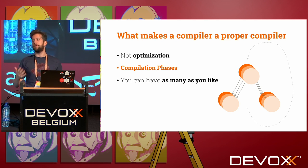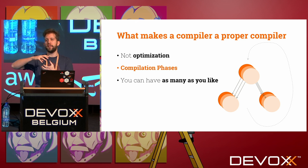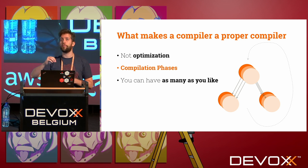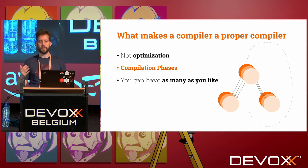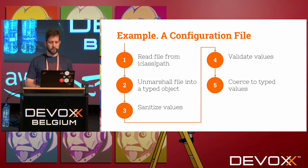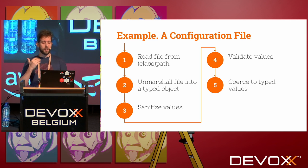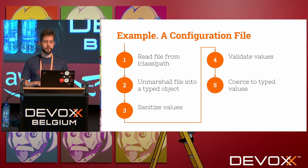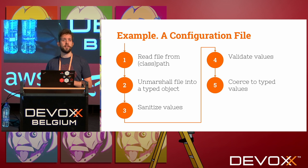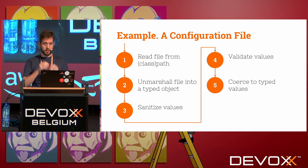What makes a compiler a proper compiler to me is not being an optimizing compiler, but structuring the evaluation of your problem in compilation phases. You can have as many compilation phases as you want — they help you structure the concerns in your application better. For the configuration file example: you read the file, un-marshall it into a typed object, sanitize the values, validate them, and coerce them into typed values.